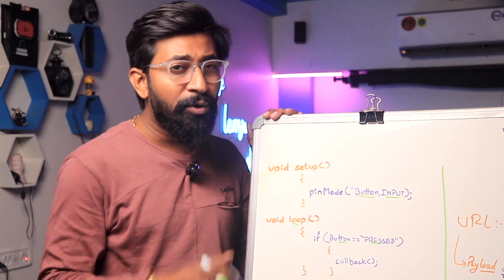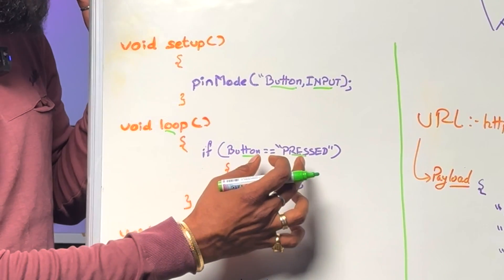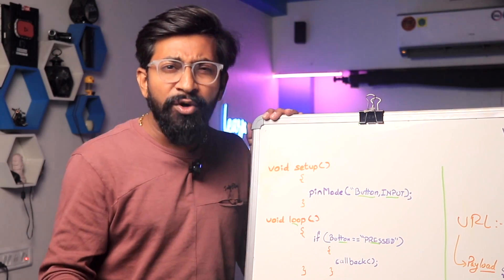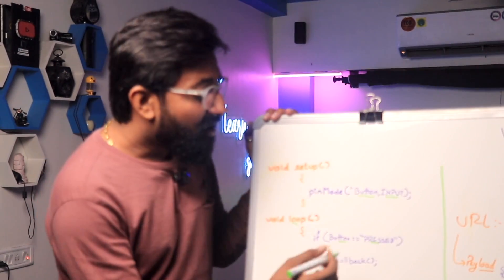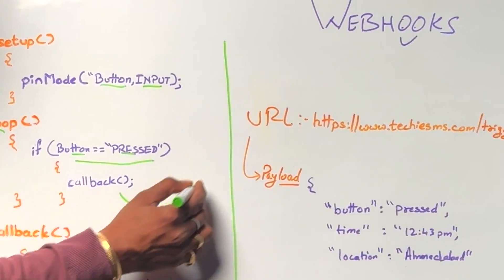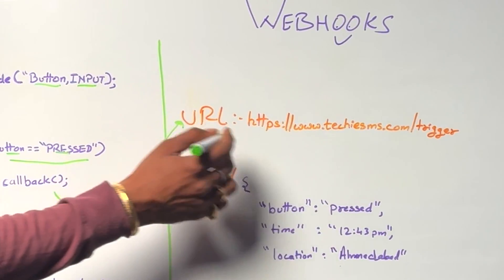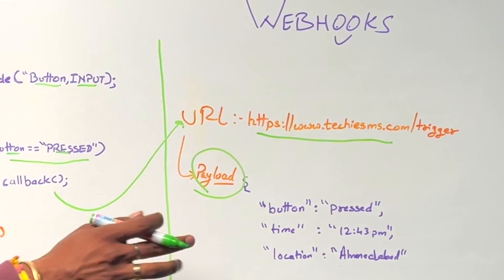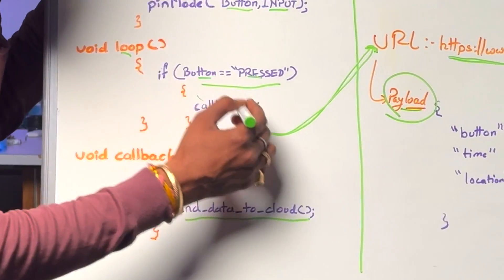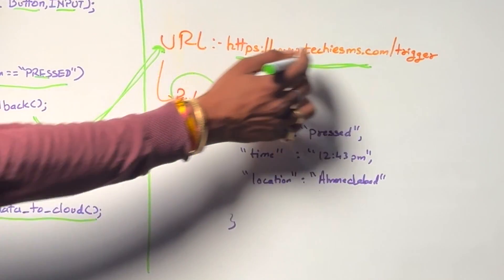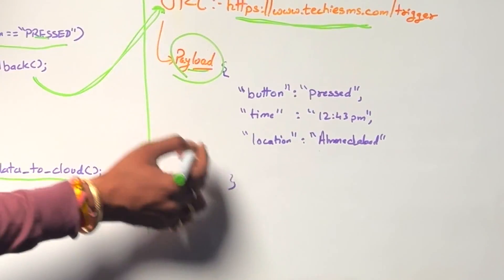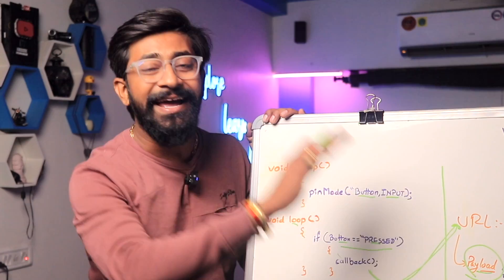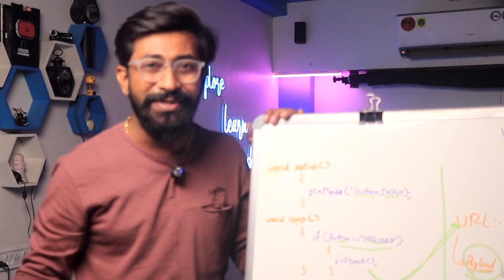That's a simple IoT code written in C++. The event is: if the button is pressed, call this callback function. That's how webhooks work — the only difference is when the event occurs it calls a URL, or requests that URL, along with a payload. When the event occurs, it calls the URL provided by the client and all the data is sent in the payload to the client side.